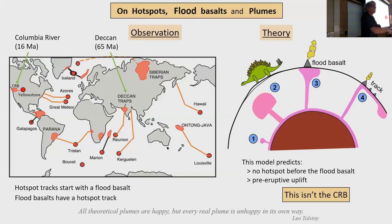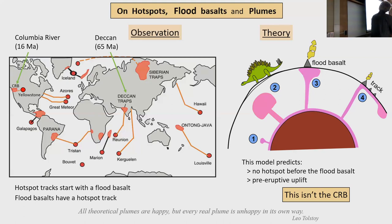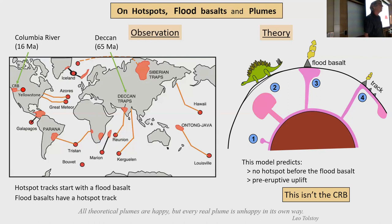I want to start by saying there's a classic story for flood basalts. This comes from the mantle plume community: anytime you see a hotspot and trace it back to the beginning, you find a flood basalt. Anytime you see a flood basalt and trace away from it, you see a hotspot track.